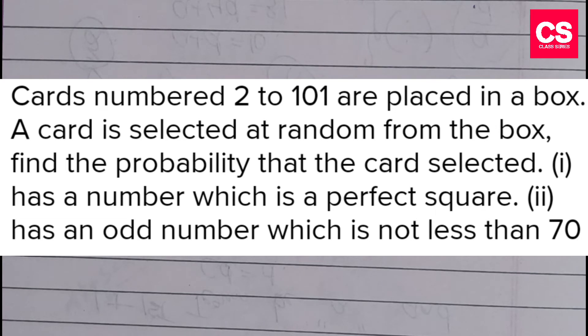Cards numbered 2 to 101 are placed in a box. A card is selected at random from the box. Find the probability that the card selected: (i) has a number which is a perfect square, (ii) has an odd number which is not less than 70.